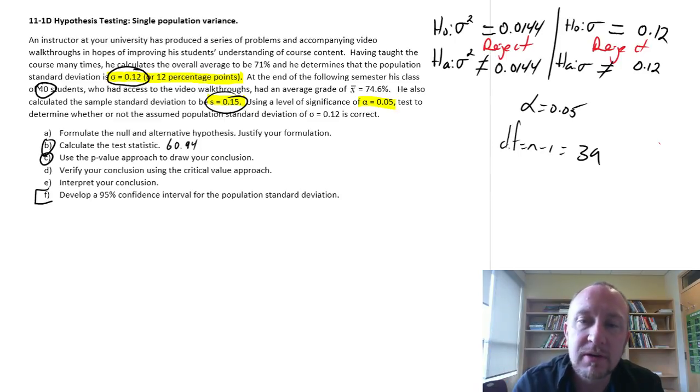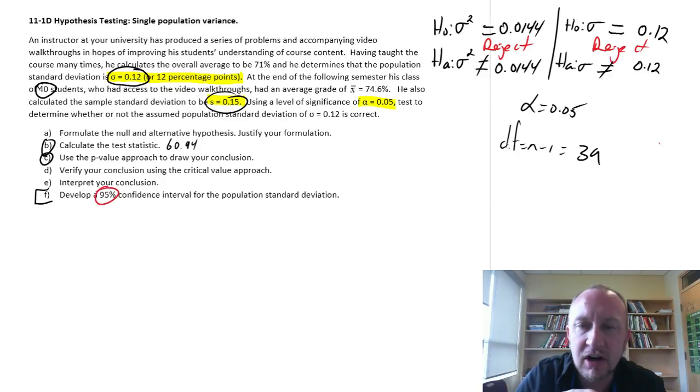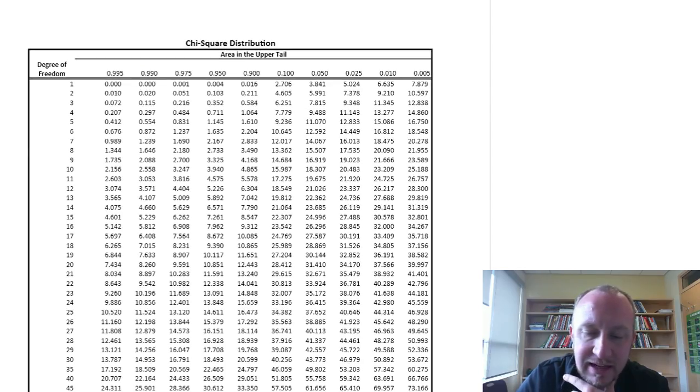The formula for an interval estimate is a little bit different from what we've seen before. I'll go through a quick derivation of this. Here we're going to work with a 95% confidence interval. I'm going to flip over to my chi-square table so we can have the discussion on how this is derived.